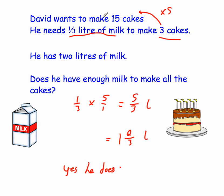So on a question like that, the things I'd be first of all thinking is: see how much milk he needs for the smaller amount of cakes, then see what you need to times that by to get to the larger amount — in this case, times by 5. Then times the milk he needs by 5, because he'll need 5 times as much. So 5 times a third is 5 thirds. Then change that into a mixed number — 5 thirds into 1 and 2 thirds liters — and you'll see really easily if the 2 liters is enough. And the answer is yes, he does.